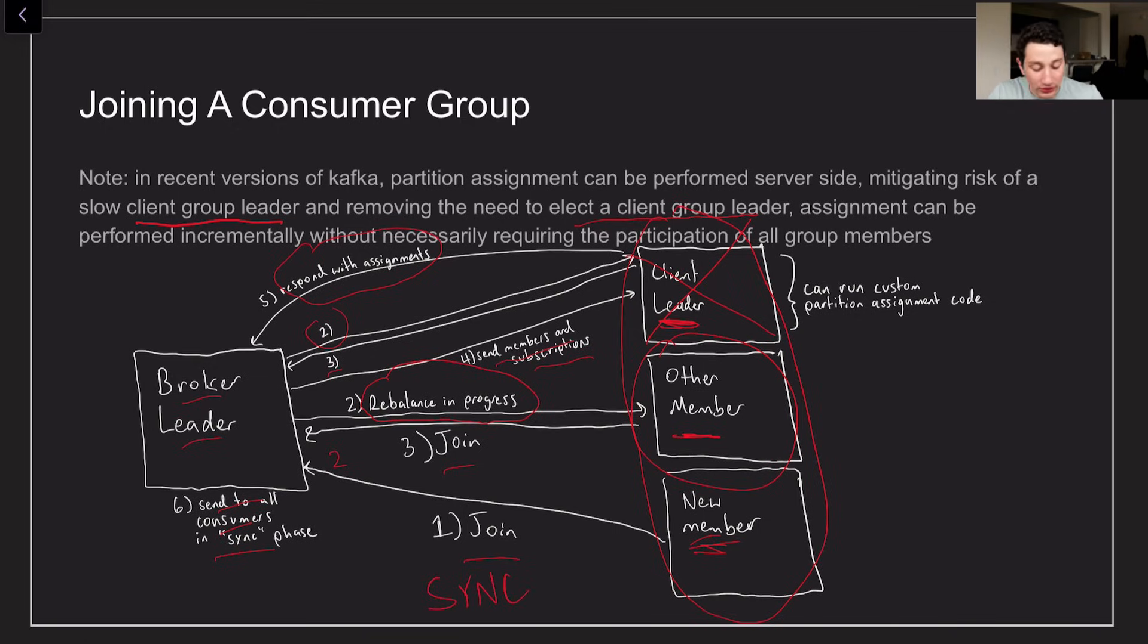But it's worth noting like I said there are some serious downsides to using the client leader right here. What we might be better off doing instead is actually having the broker leader itself be computing the partition assignment. And so it can do that in newer versions of Kafka. Obviously it's going to be a little bit less flexible because you can't just run arbitrary code. But this is kind of the direction that Kafka is starting to move towards.